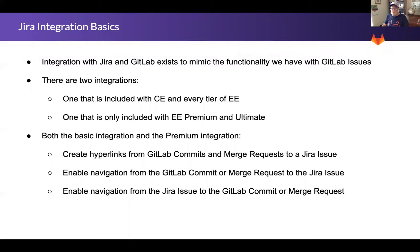Both integrations allow for the creation of hyperlinks from GitLab commits and merge requests to a Jira issue, and navigation from the GitLab object to Jira and from Jira to the GitLab object. The differences are in how the links are presented to the user, and how and when the links are created, and how the integrations are set up. It's important to note that these integrations are not mutually exclusive — premium and ultimate customers can have both integrations operational at the same time, and most do.